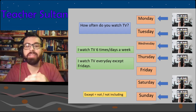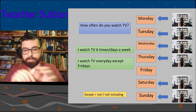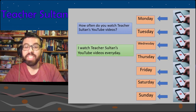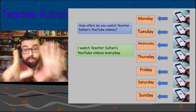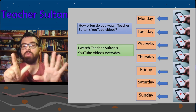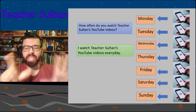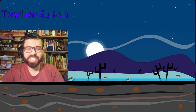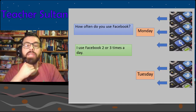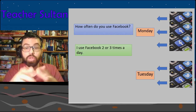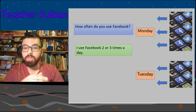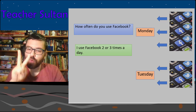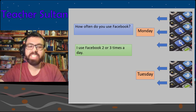If it's seven days you can say 'every day.' Things you might do every day: go to a cafe, eat, sleep. If you do something many times a day — like use Facebook — you'd say 'I use Facebook two or three times a day.'